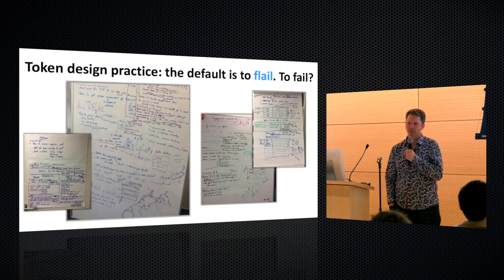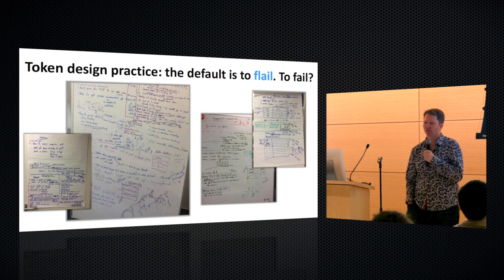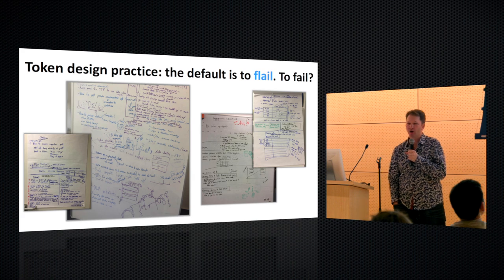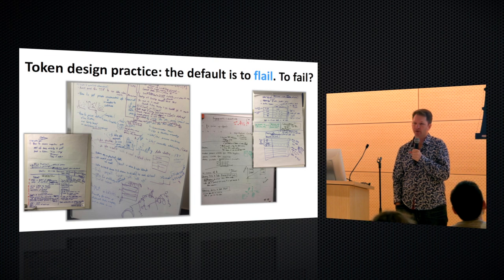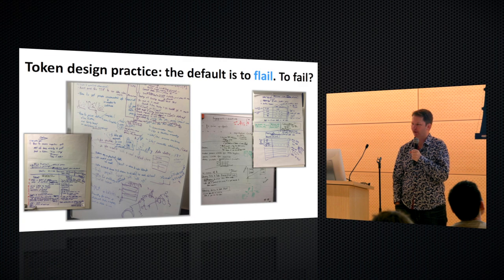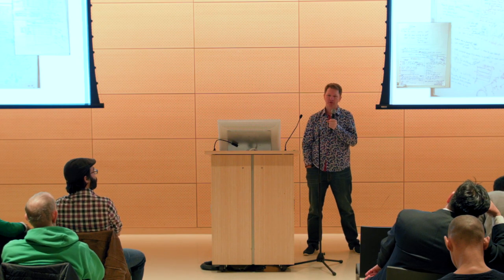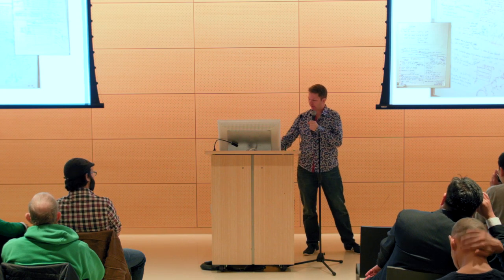We didn't know when we were done. We had lots of cool ideas, partially documented with photos of whiteboards and in notes. But how did we know when we had a design we could run with, at least as a first stake in the ground? It's actually really hard to do token design — the default is to flail, possibly to fail. So I started asking myself, as an engineer: where's the structure to this process? What can I do to help structure it? Others have been starting to ask that question too.